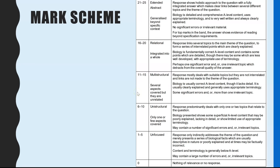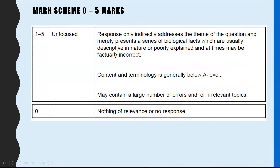I'll go through the first parts quickly because they're very low marks. You only get zero if you write nothing relevant. One to five marks is described as unfocused — you don't really address the theme. The theme is the title. Instead, you just present some facts, usually descriptive, not well explained, and they might be incorrect. It's not A-level standard, with lots of errors.